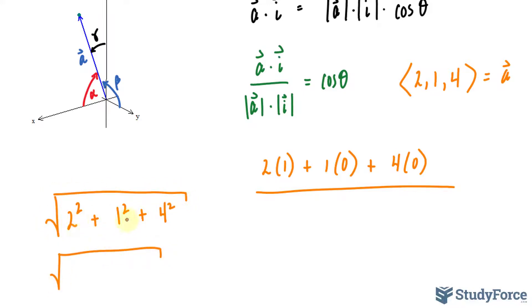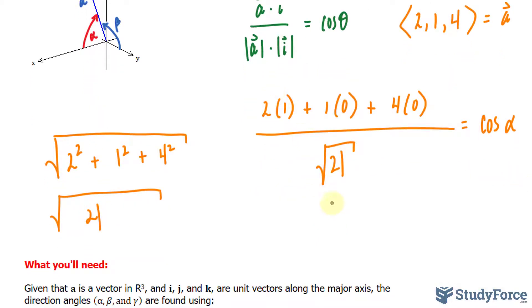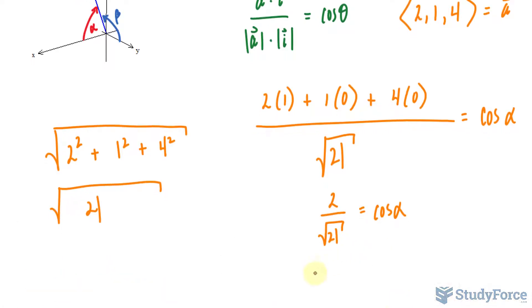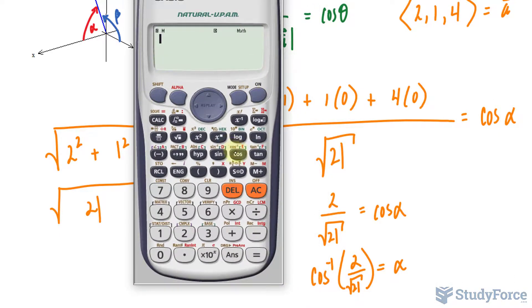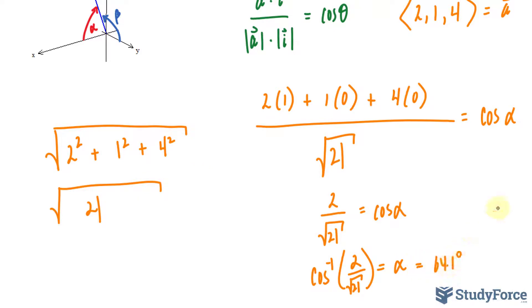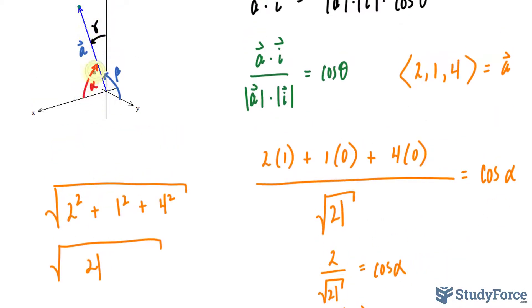We have the square root of 4 plus 1 plus 16, that's 21. So I'll write the square root of 21, and that equals cosine alpha. Let's simplify: 2 over the square root of 21 equals cosine alpha. We take the inverse of cosine, so cosine inverse of 2 over the square root of 21 gives us the angle for alpha. Let's use our calculator—make sure your calculator is in degree mode. Cosine inverse of 2 divided by the square root of 21 gives us 64.1 degrees. This is the angle the blue vector makes with the x-axis.